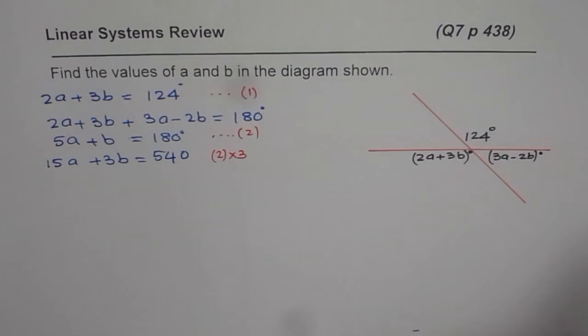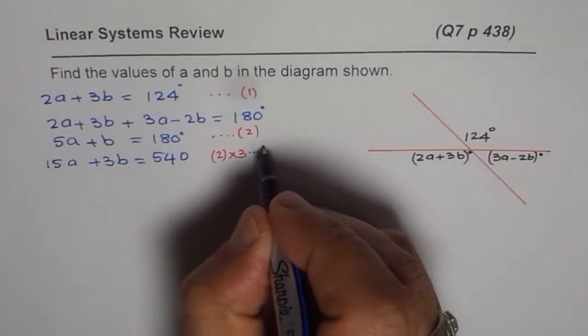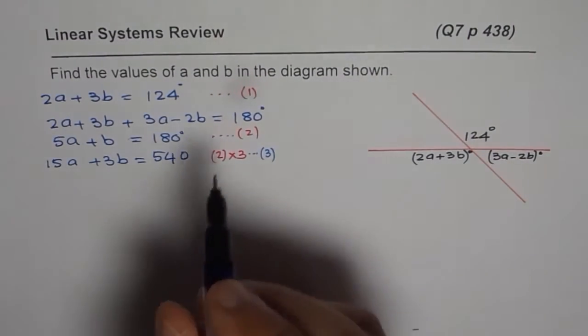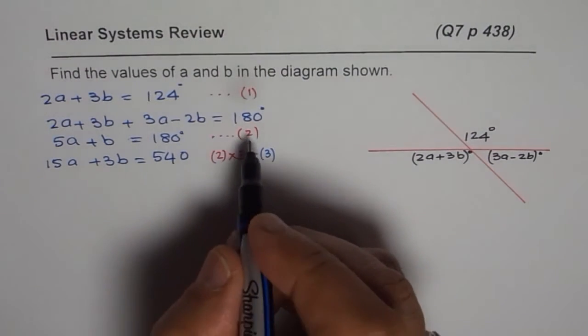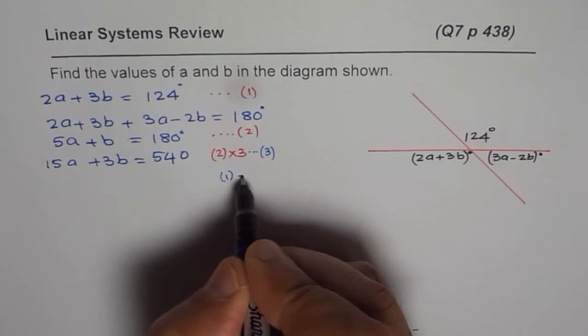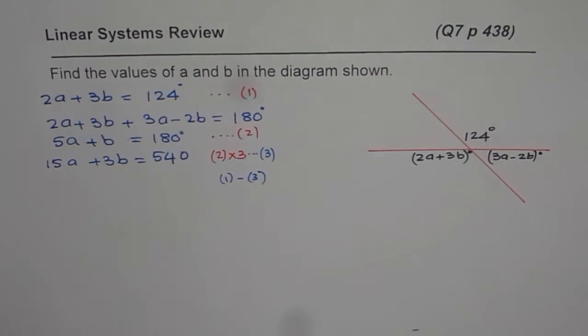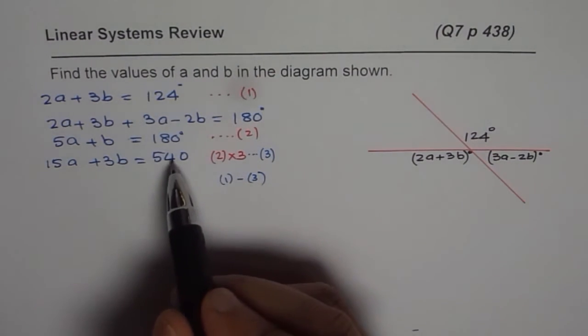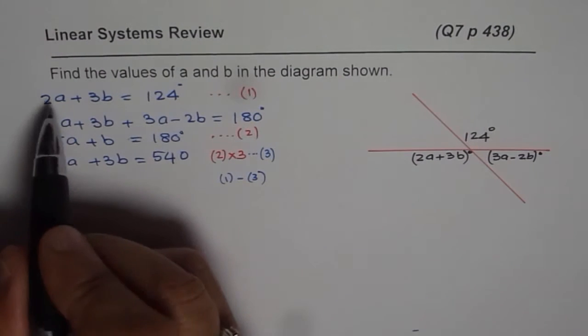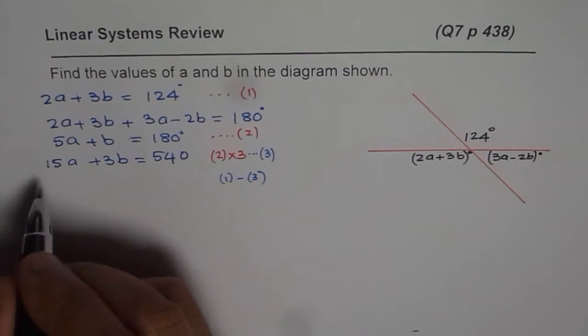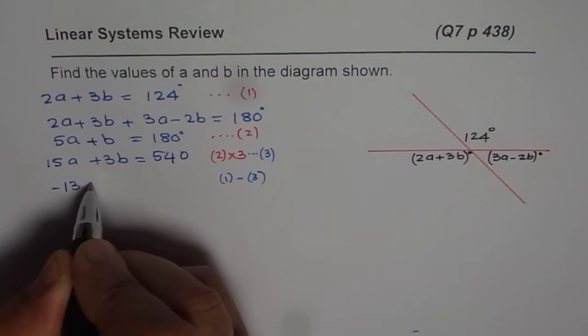Now, we can eliminate B by taking away equation, let us call this equation 3 now. So when we take away equation 1 from 3, let us do 1 minus 3. So we are taking away equation 3 from 1. So we get 2A minus 15A as minus 13A. 3B minus 3B is 0.